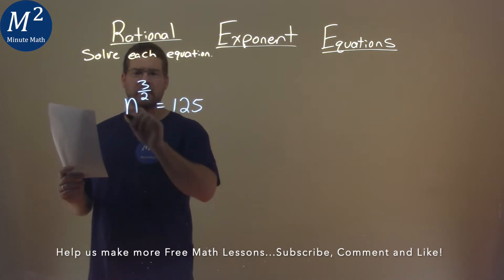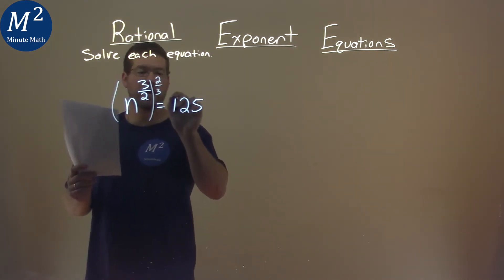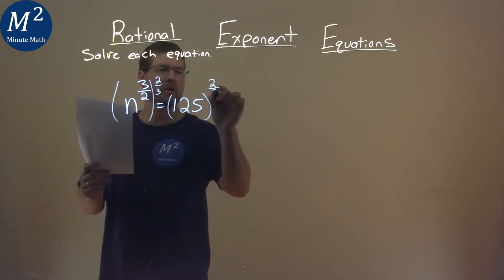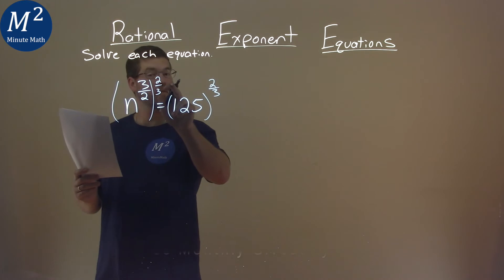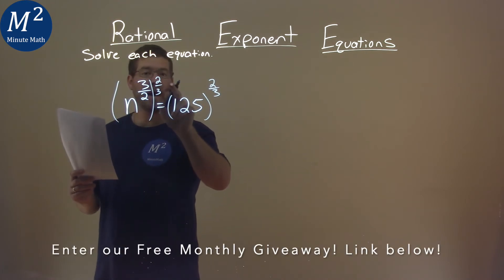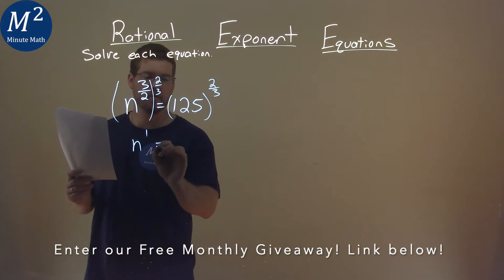Well, I want to get rid of this exponent here, so to do that I'm going to raise both sides to the two-thirds power. Make sure we go to both sides here. We have n, well, it's the three-halves power times two-thirds power, multiply them out by our rules of exponents, and that's just the first power. So we have n to the first power here.